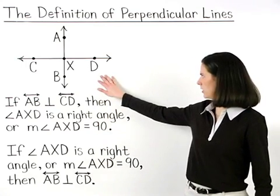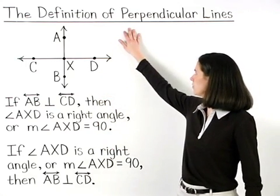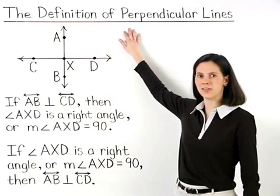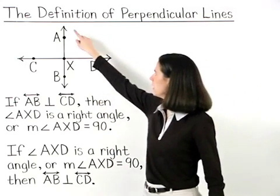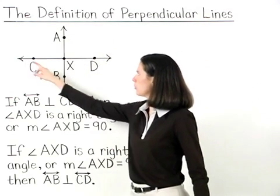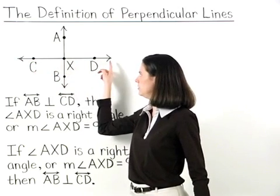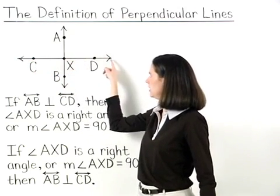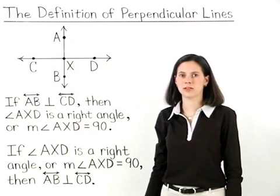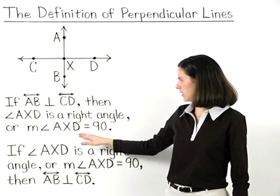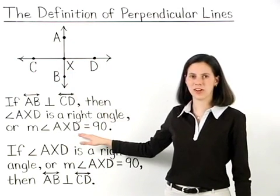Using the diagram shown, the definition of perpendicular lines states that if line AB is perpendicular to line CD, then angle AXD is a right angle, or the measure of angle AXD equals 90 degrees.